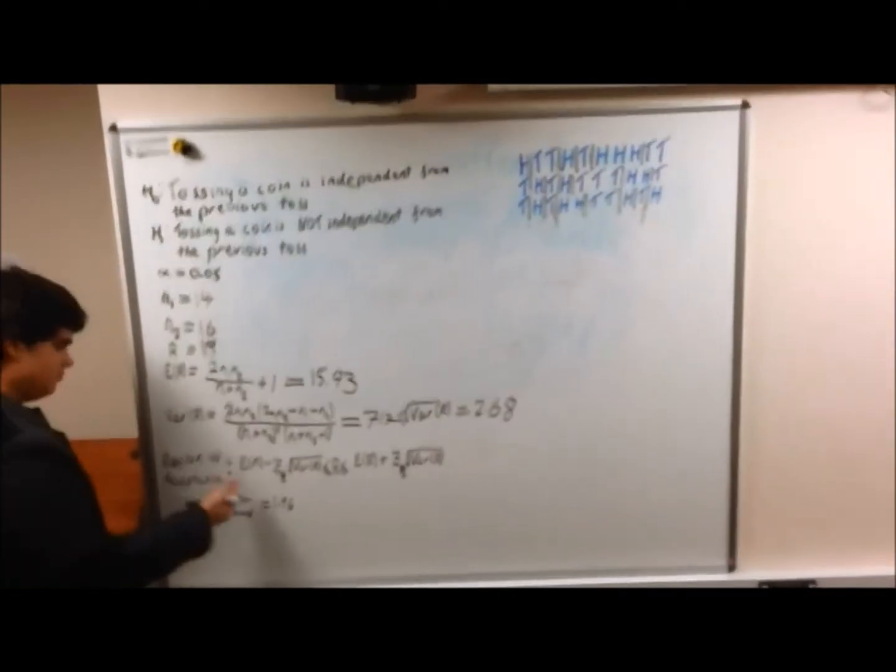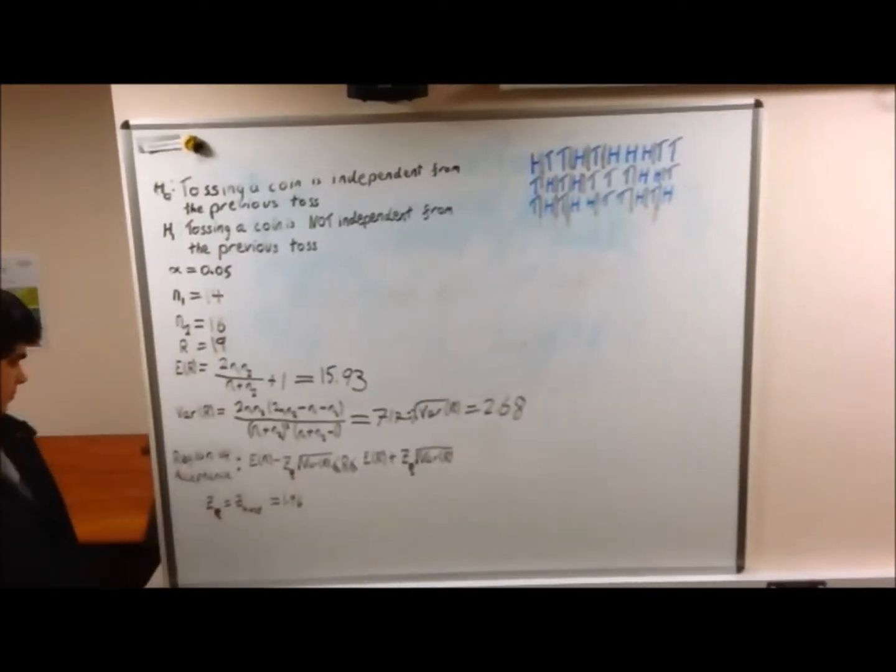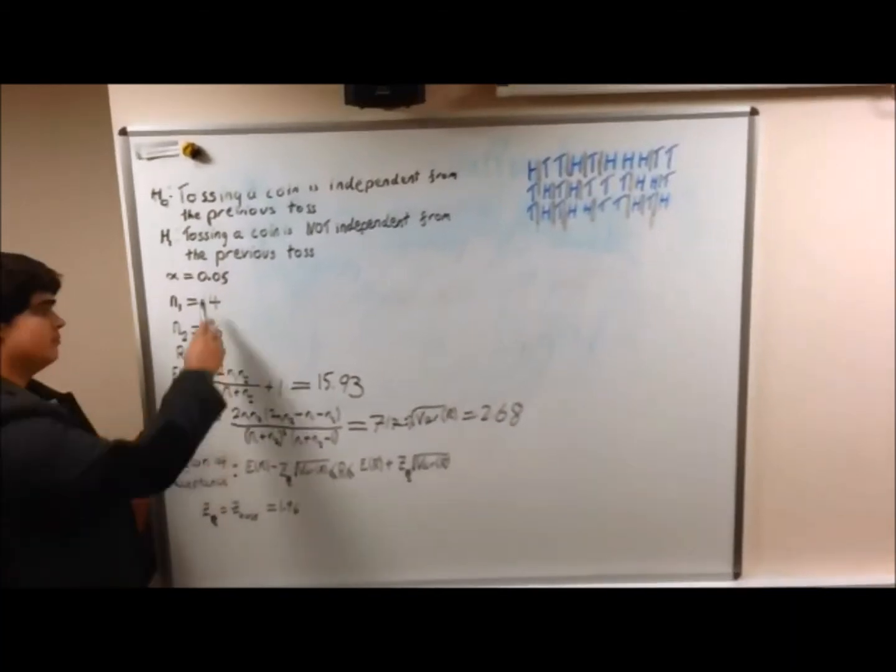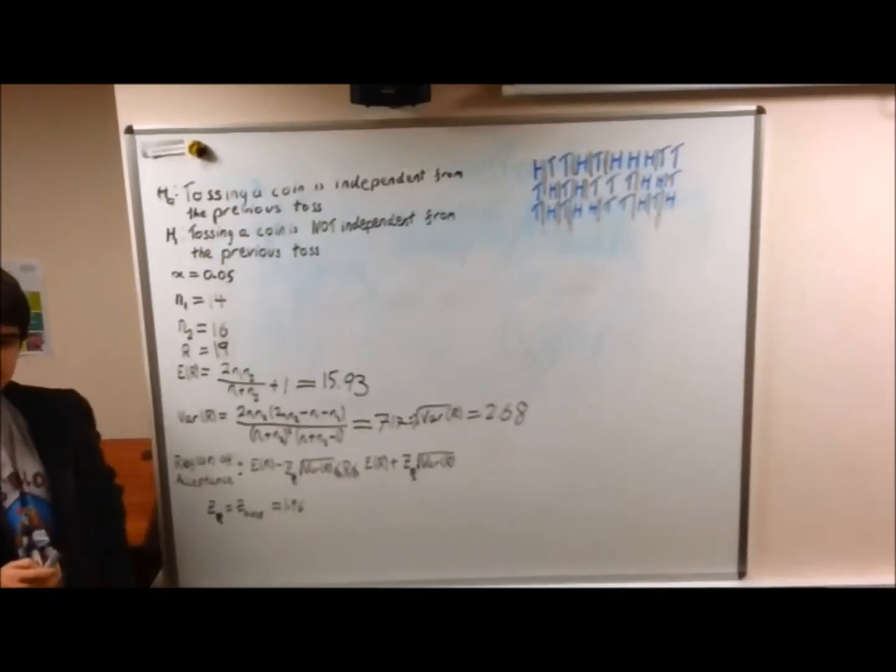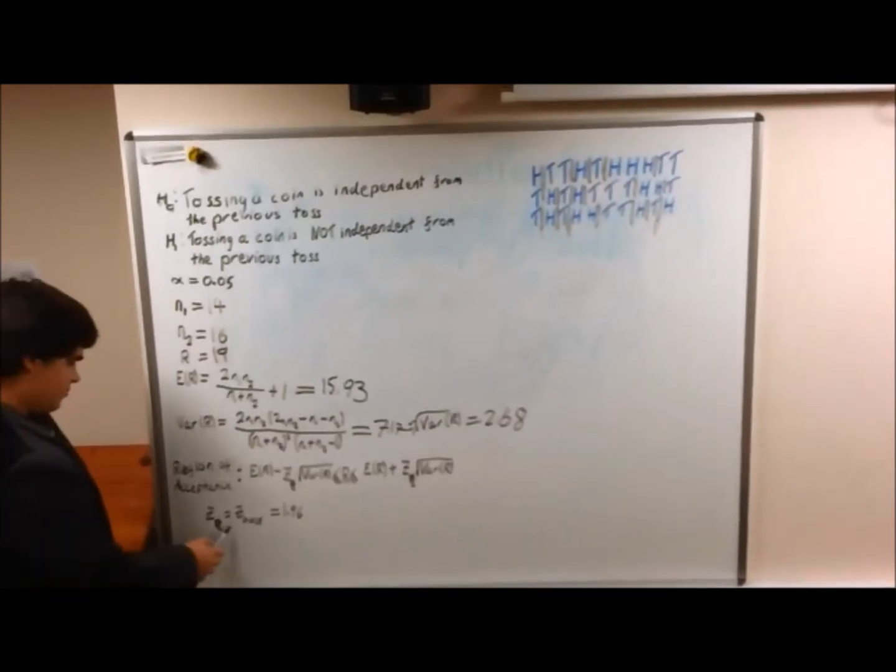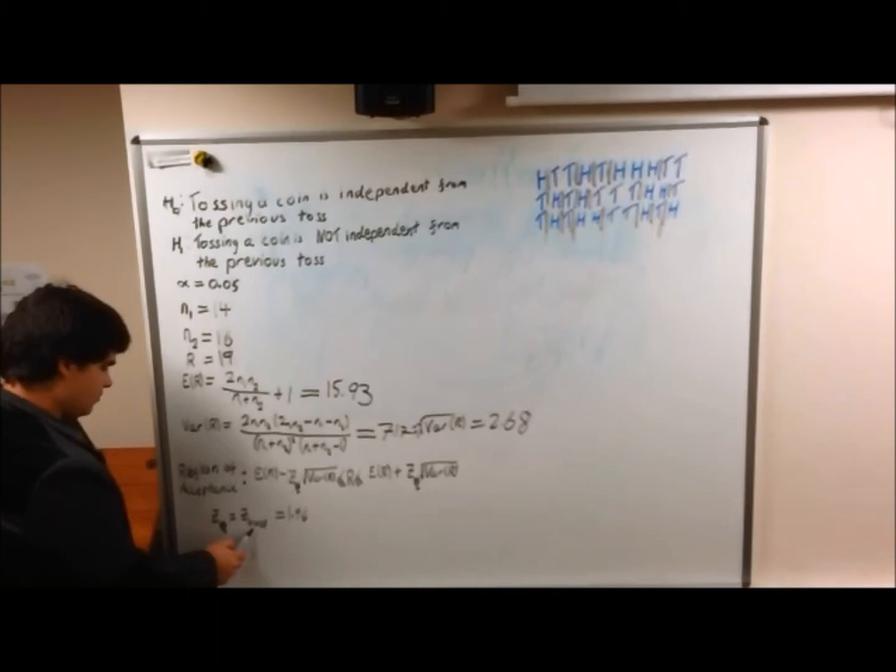We get the value of 1.96. Since our alpha level is 0.05, then that's the 95% confidence interval, which we divide by 2 and find 1.96 by looking at the Z table.